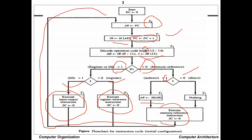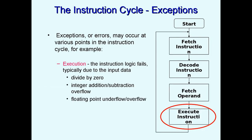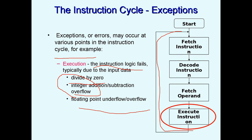The instruction cycle is a cyclic process and restarts after each instruction. Exceptions can occur at various points — for example, if instruction logic fails, a divide-by-zero occurs, or integer addition/subtraction overflow or floating-point underflow/overflow happens. These exceptions are handled as interrupts, and the interrupt cycle will be discussed in the next class.